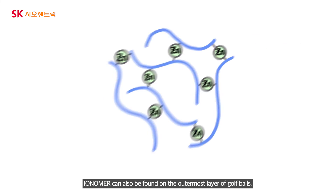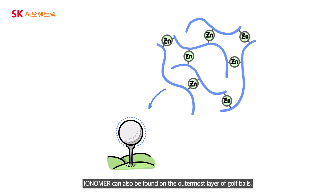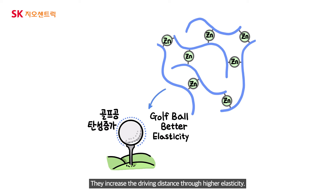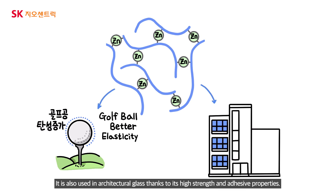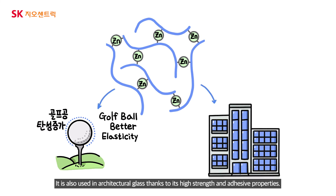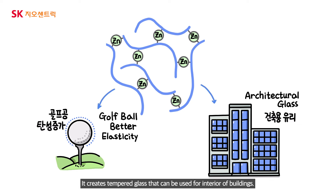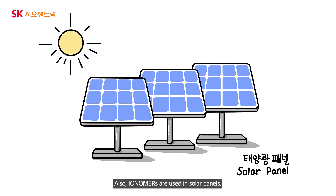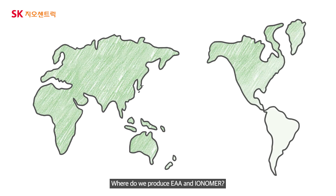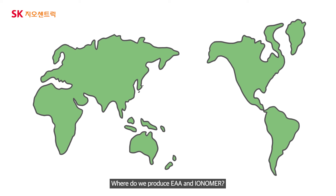Ionomer can also be found on the outermost layer of golf balls, increasing driving distance through higher elasticity. It is also used in architectural glass thanks to its high-strength and adhesive properties, creating tempered glass that can be used for interior buildings. Additionally, ionomers are used in solar panels.